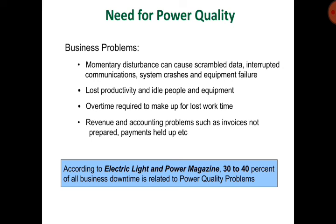The need for power quality: business problems include momentary disturbances causing corrupted data, interrupted communications, system crashes, and equipment failure — leading to lost productivity, idle people and equipment, overtime to make up lost work time, and revenue/accounting problems such as invoices not prepared or payments held up. According to Electric Light and Power magazine, 30 to 40% of all business downtime is related to power quality problems.